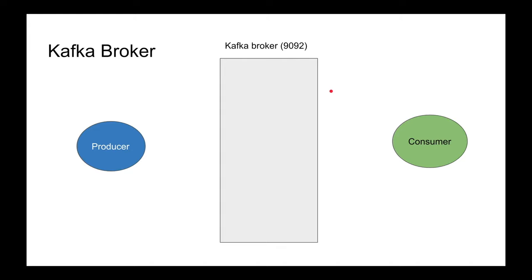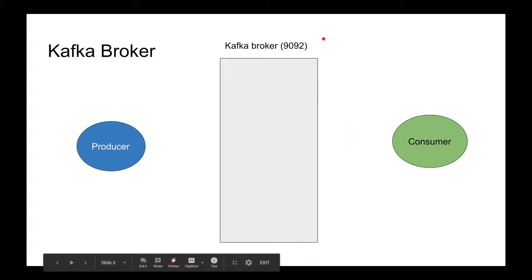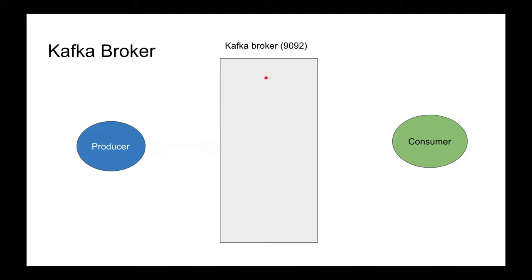There are two pieces of abstraction here, which we call the producers and the consumers. Producers produce content — they publish content to the broker — and then consumers consume content from the broker. The producer connects to the broker using a TCP connection, and that's a raw TCP connection, so it's bi-directional. The broker can send information to the producer and the producer can send information to the broker.